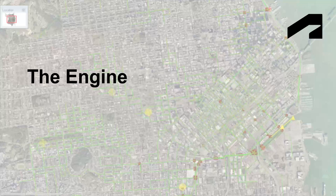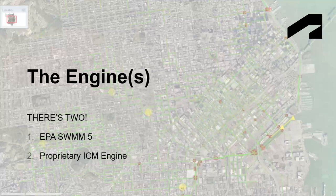Now we'll talk about the hydraulic engine behind InfoWorks ICM. There are actually two engines you can use: an EPA SWMM 5 engine and the proprietary ICM engine. Most of what I'll talk about focuses on that proprietary engine. One of the key differentiators with ICM's solver is its simulation speed.